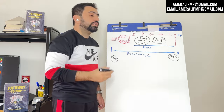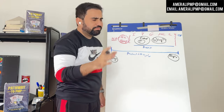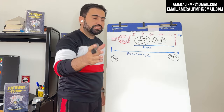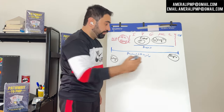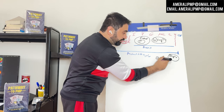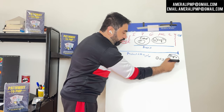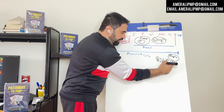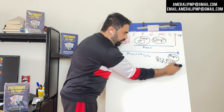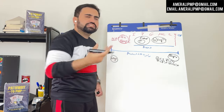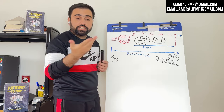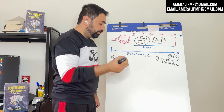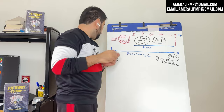How do we collect requirements? It's the same way we identify stakeholders or identify risks. We use expert judgment, focus groups, OPE and EEF — every single technique we use to identify stakeholders is the same. In addition to that, we can also use a prototype.